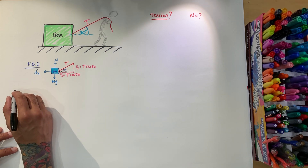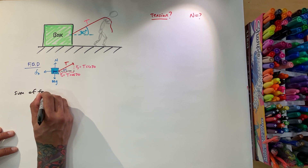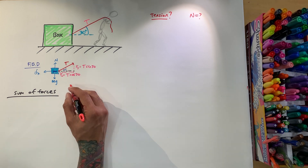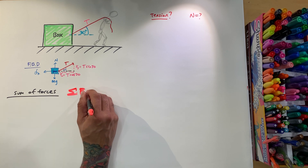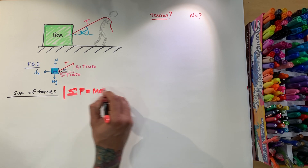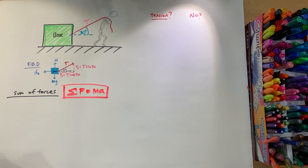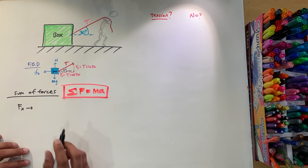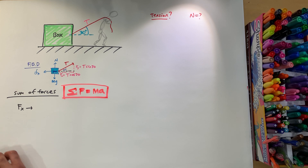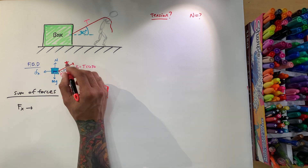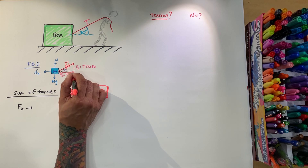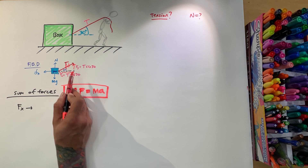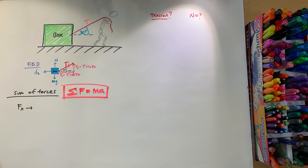Sum of forces — we all know from the equation: the sum of F equals ma. So now we're going to do the sum of forces in the x direction. We just broke up this tension force into its x and y components, so the original diagonal tension no longer exists — we only have Fx and Fy now.